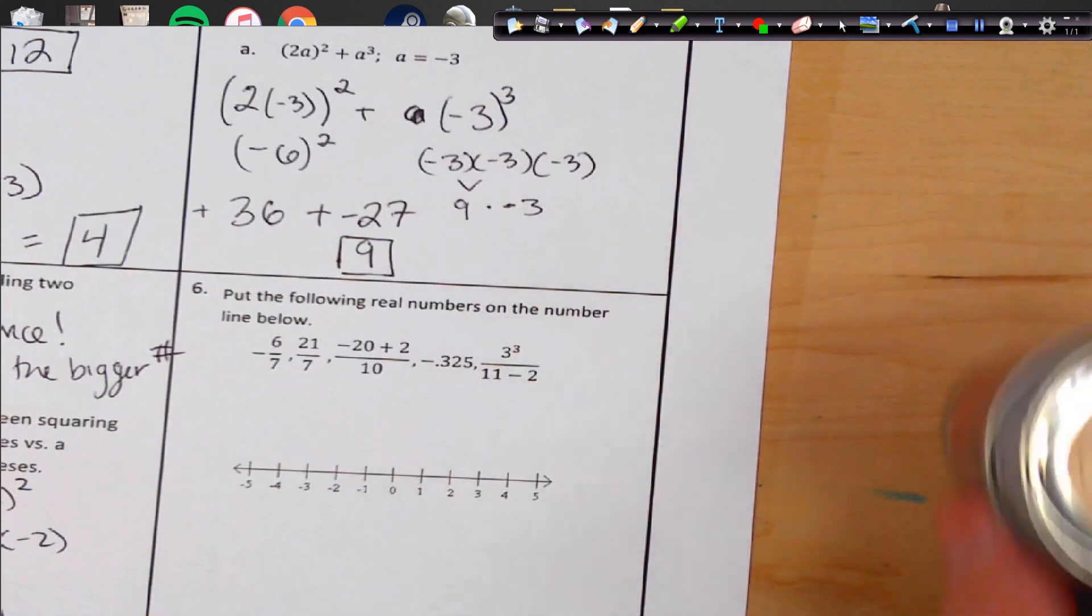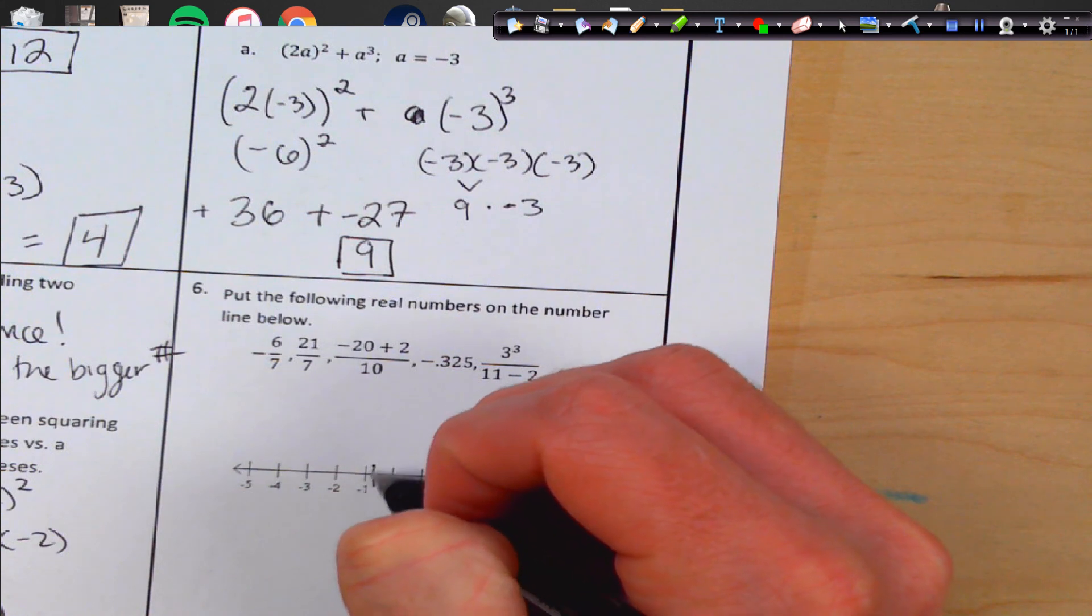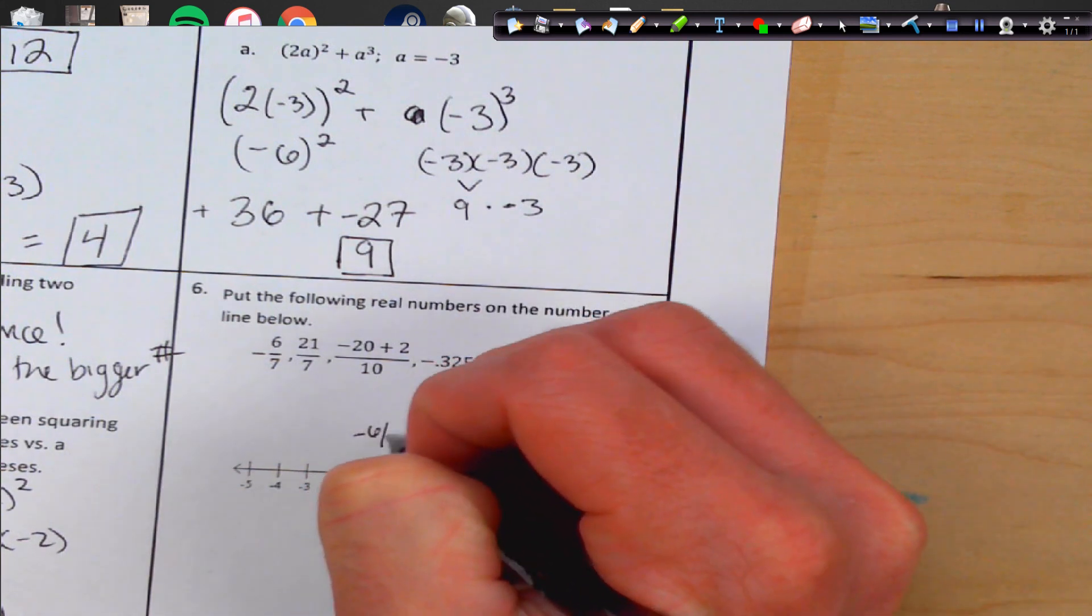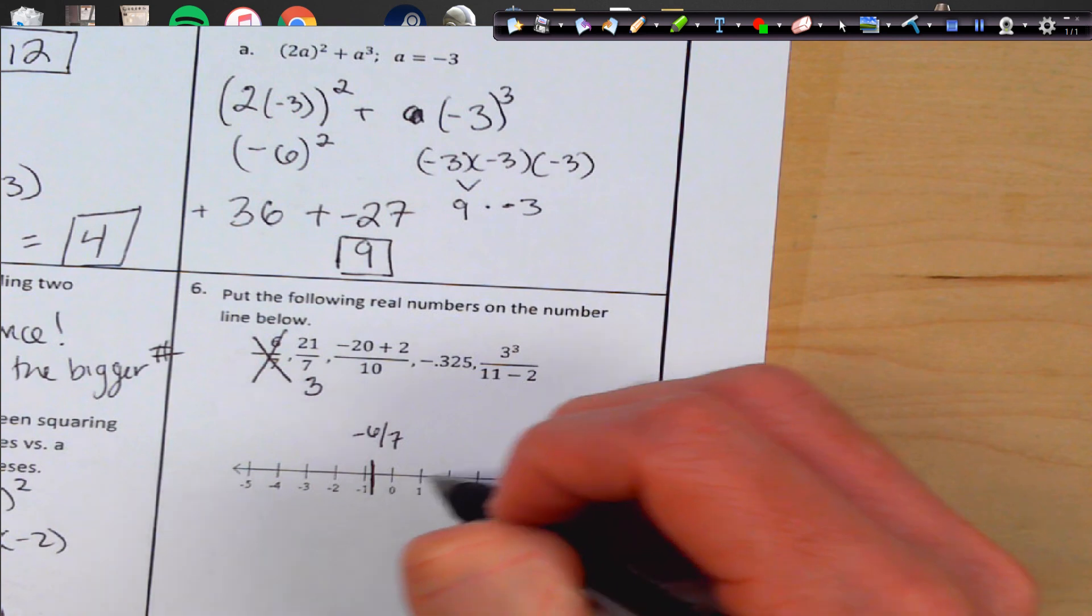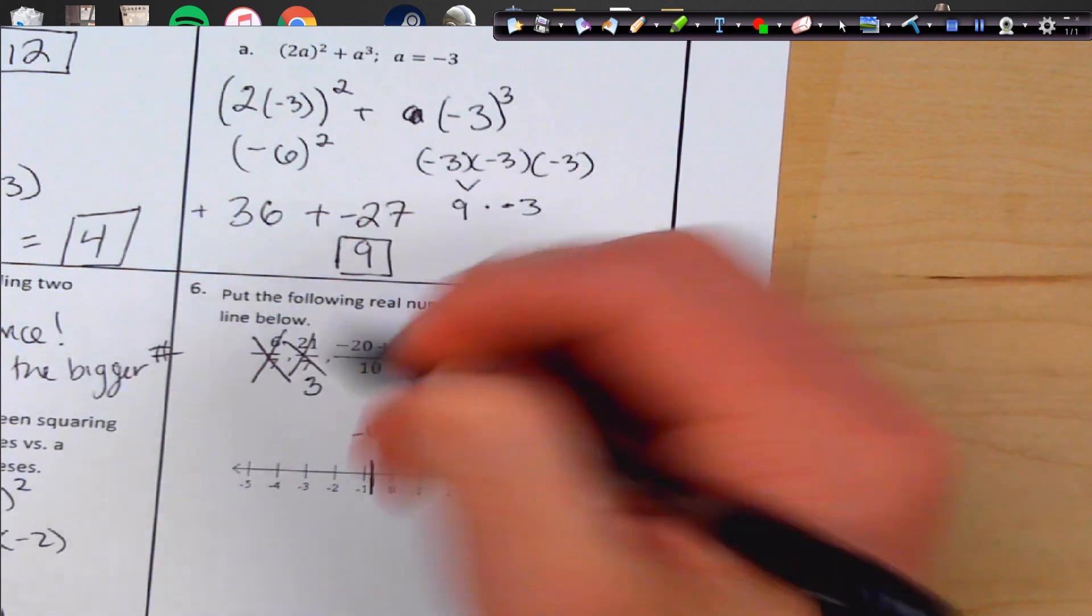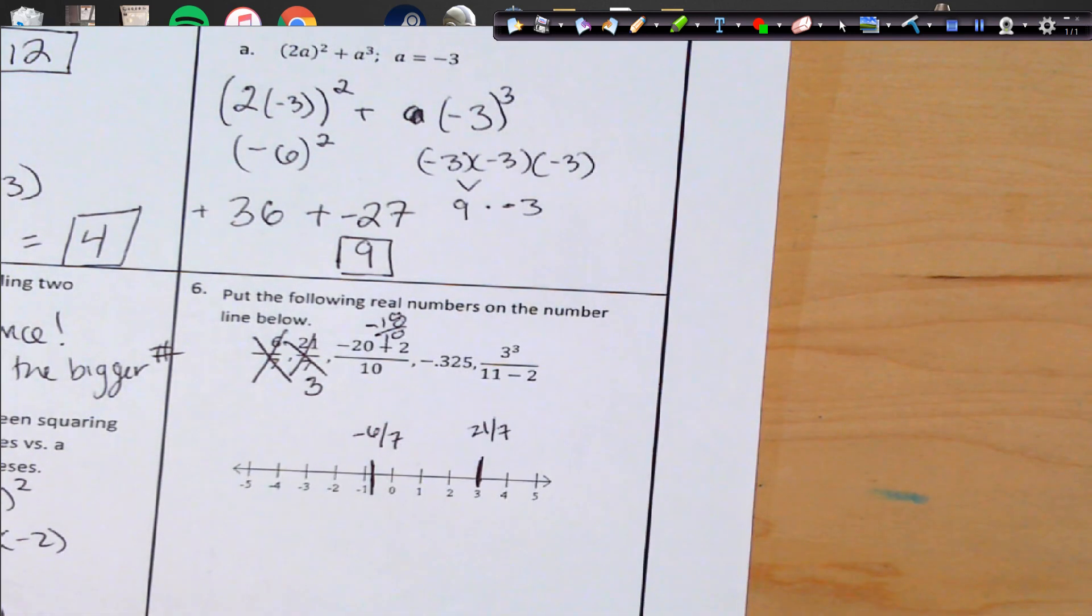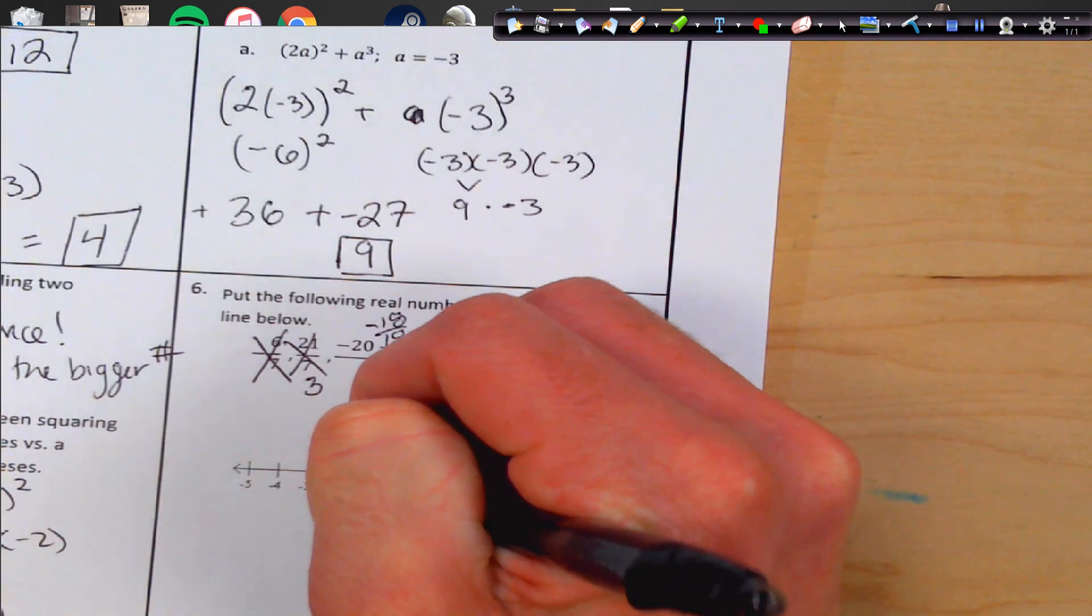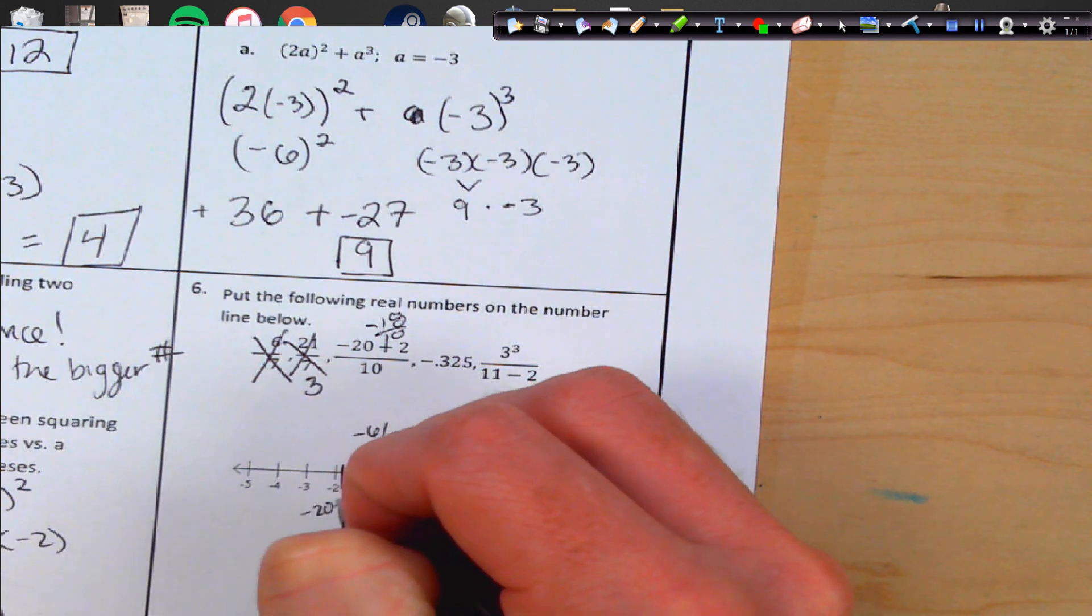Alright, last one. Put the following real numbers on the number line below. Negative 6 sevenths is not quite 1, but it's very close, so we're going to put it right about there. 21 over 7, so 7 fits into 21 three times. So I'm going to go up to 3 and we'll put 21 over 7. Negative 20 plus 2 is a negative 18 over 10. And 10 fits into that once with a remainder of 8, so it's a little over 1, almost 2. So we're going to go right about here. It's negative, it's getting very close to negative 2. And we're going to put that as negative 20 plus 2 over 10.